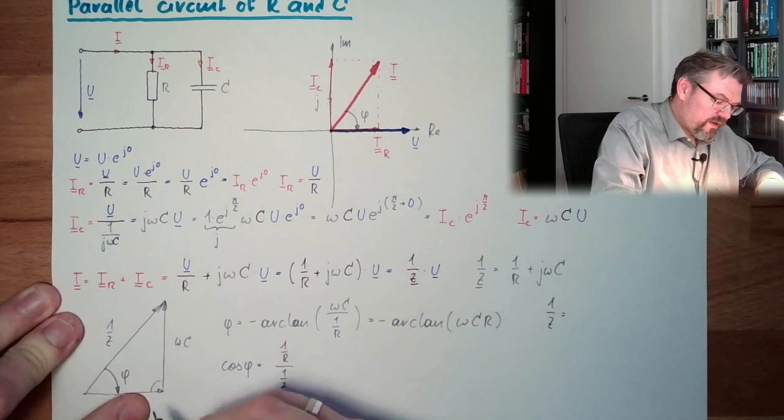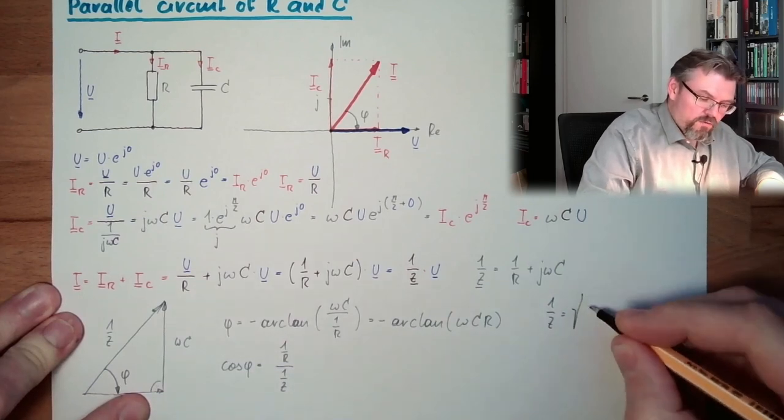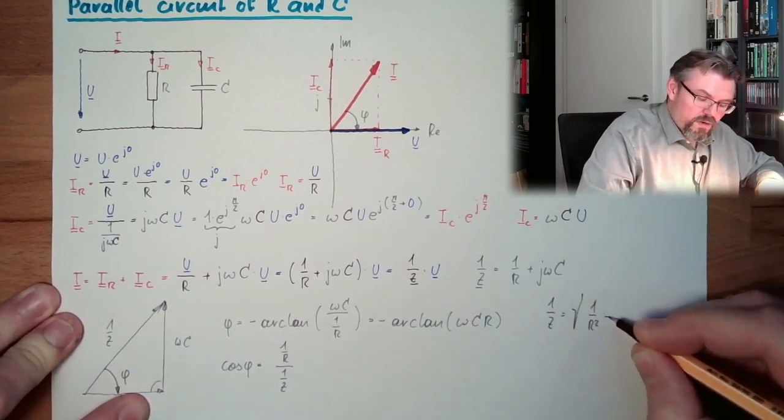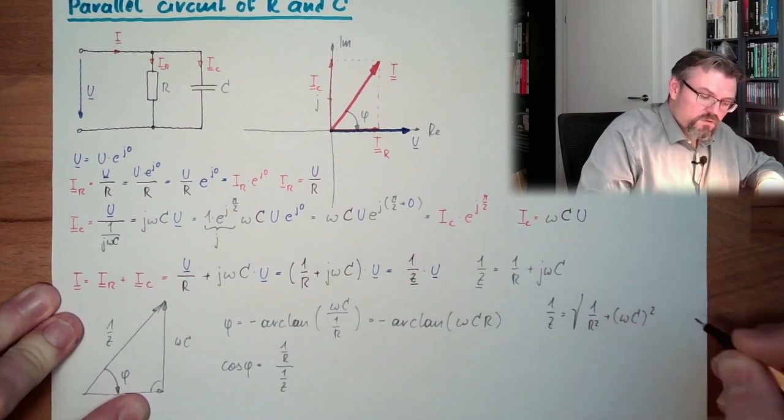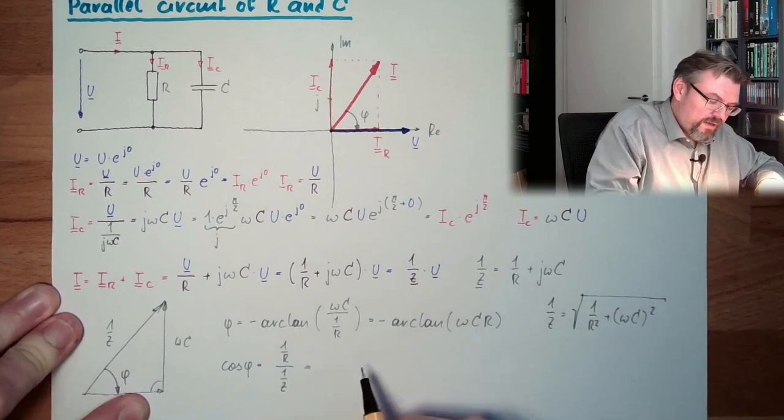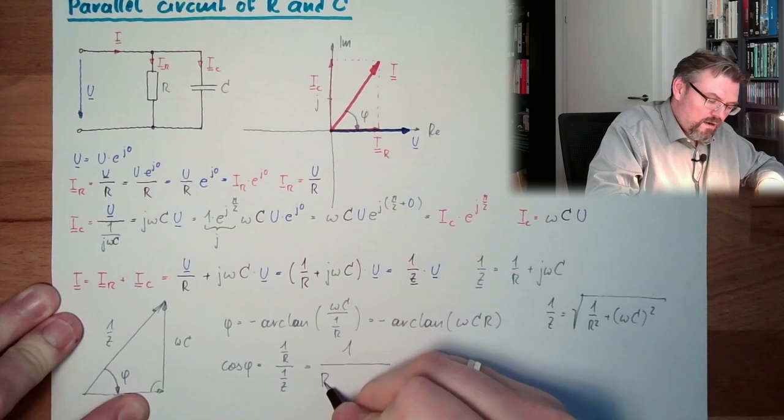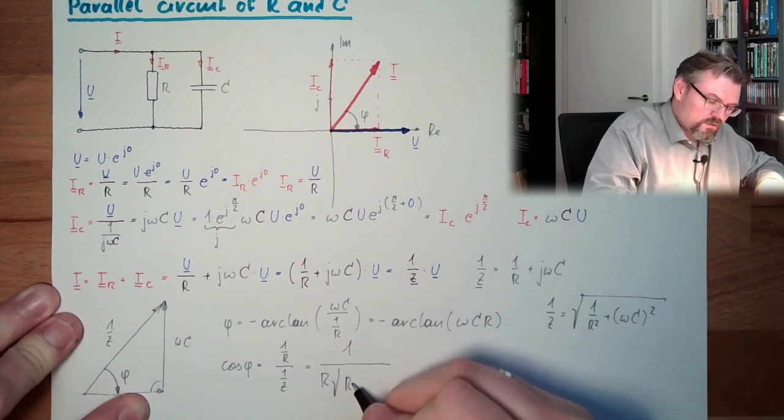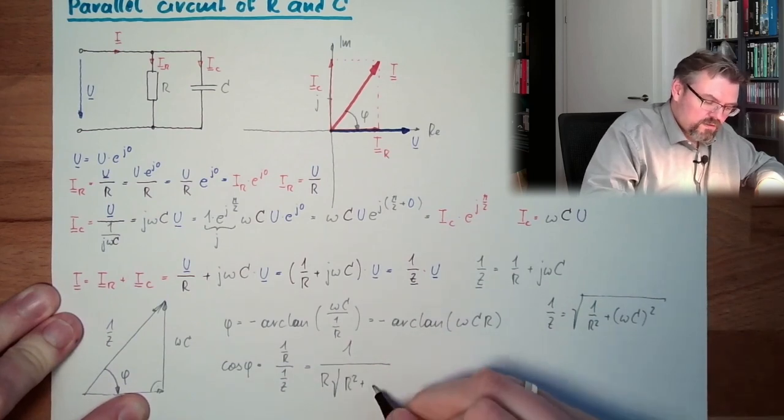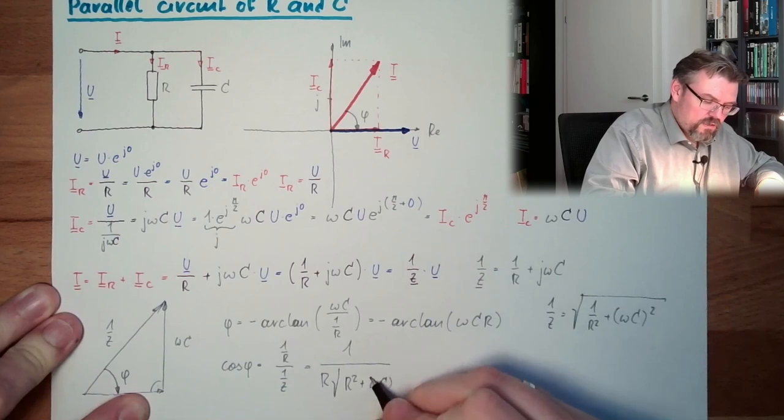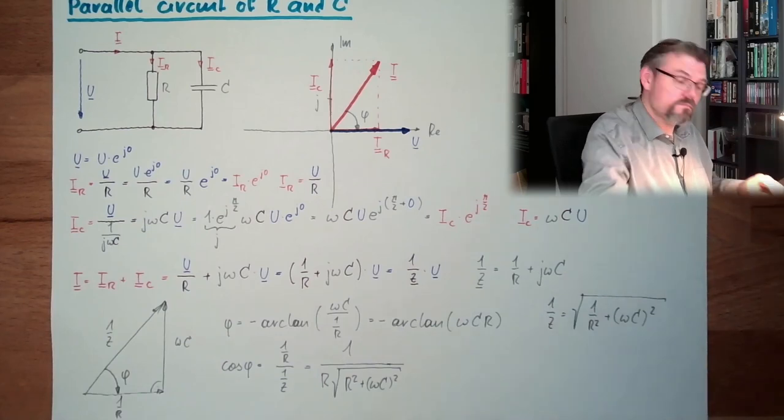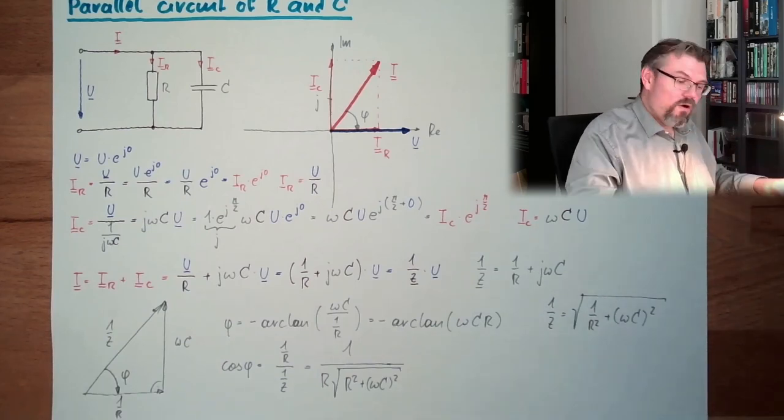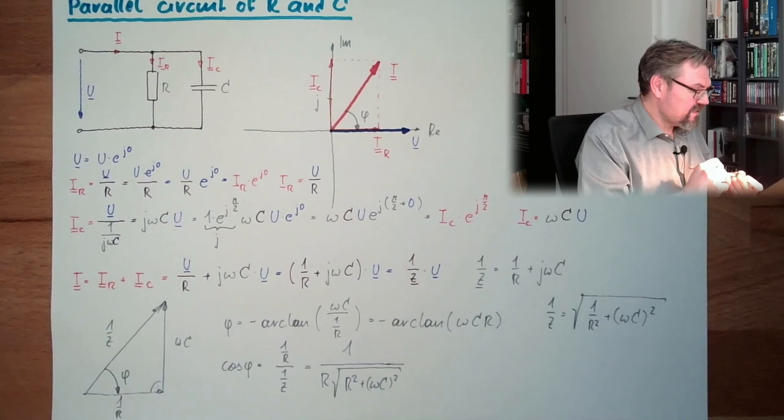1 divided by Z equals Pythagoras, here we have 90 degrees, square root of 1 divided by R squared plus ωC and this stuff also squared. So we're ending up at 1 divided by R and this, R squared plus ωC squared. Power factor.